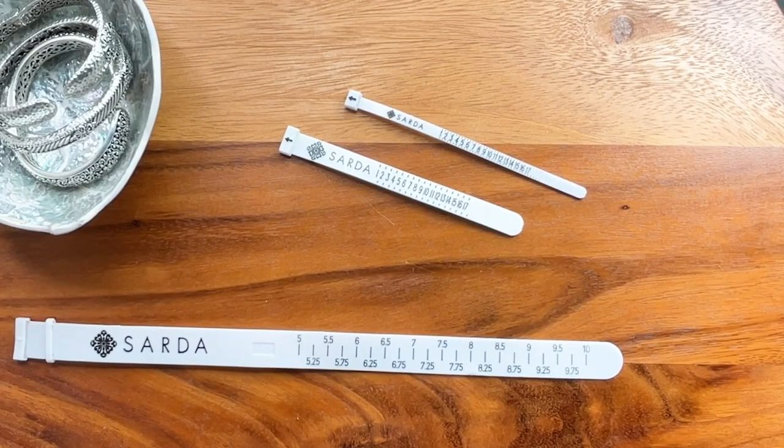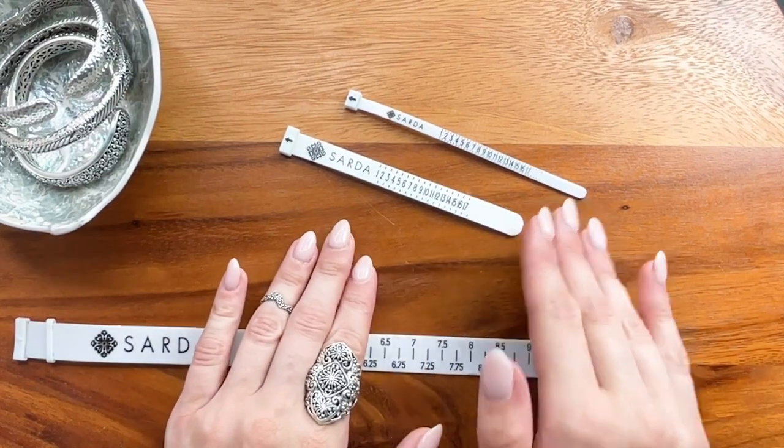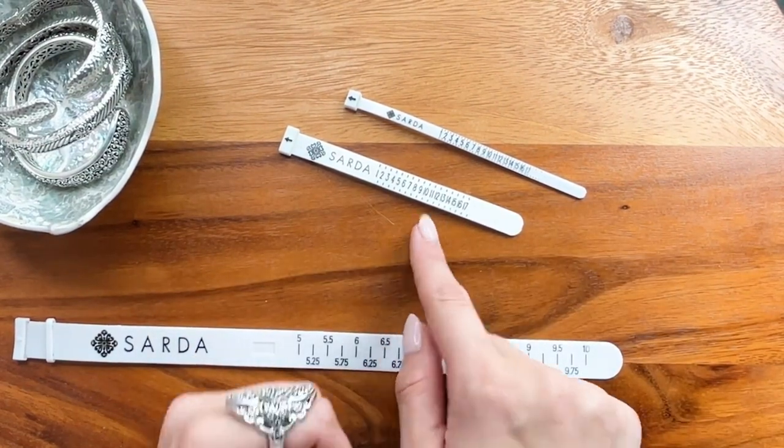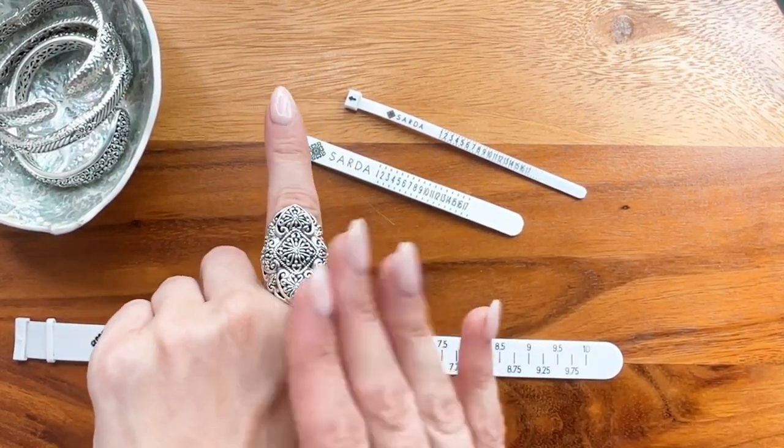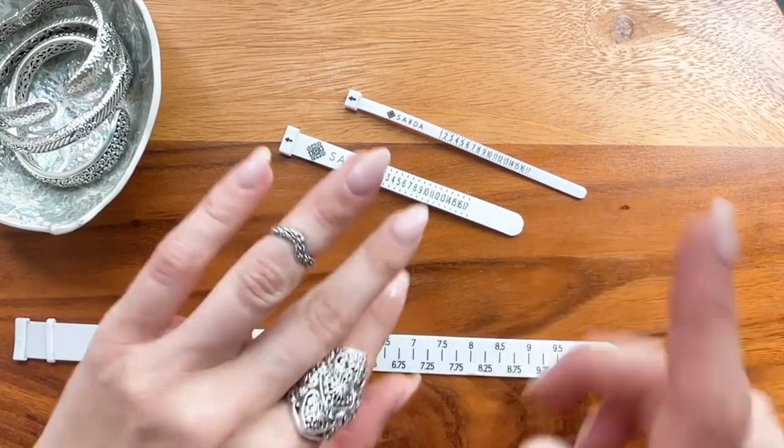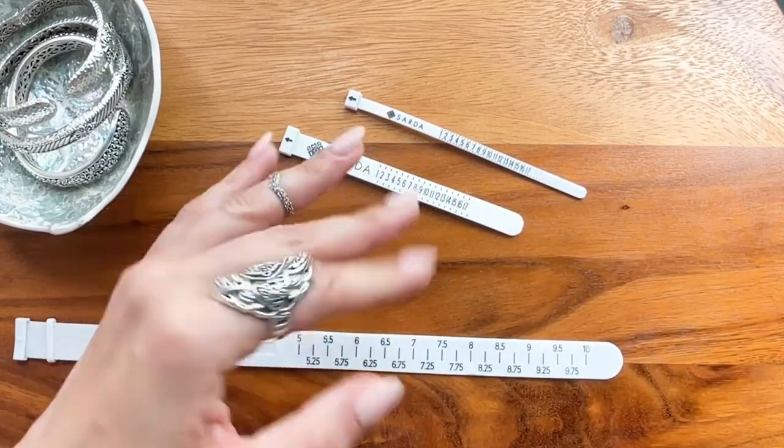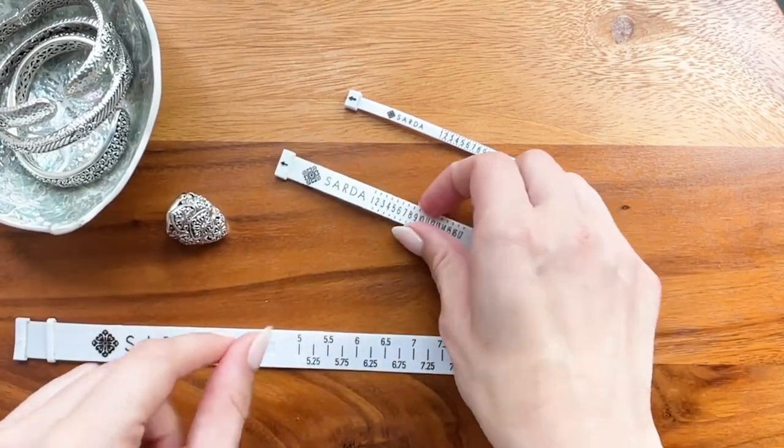Today I am going to show you how to measure your finger for rings. For Sarda rings we give you two ring sizers: wide sizer for large rings and the thin sizer for small band rings. The wide sizer will be the most common for Sarda rings.